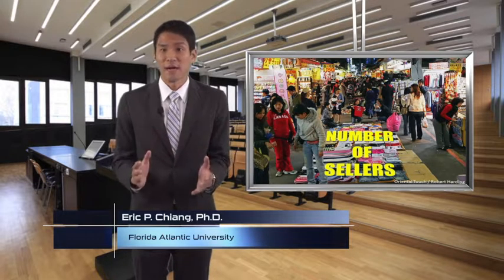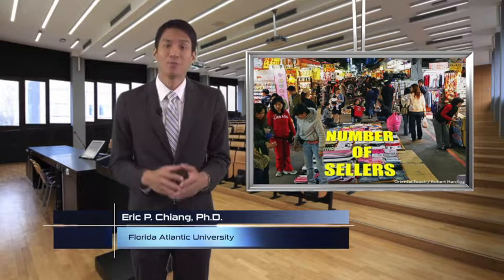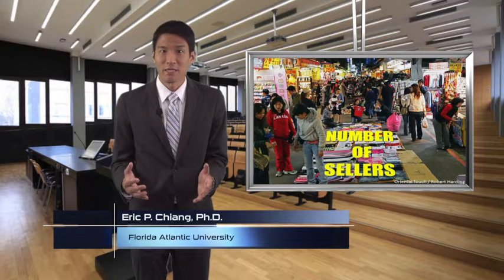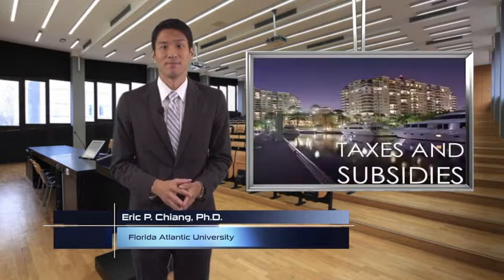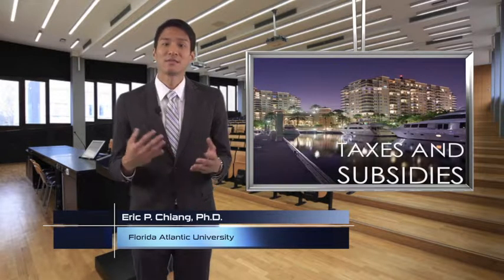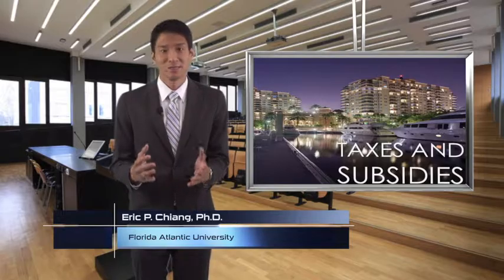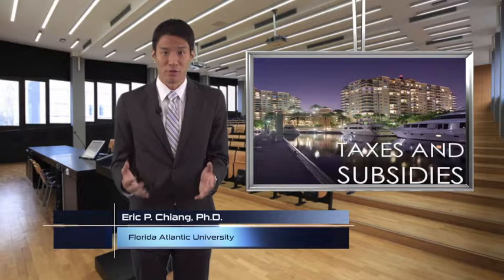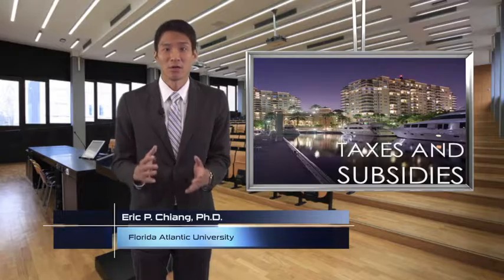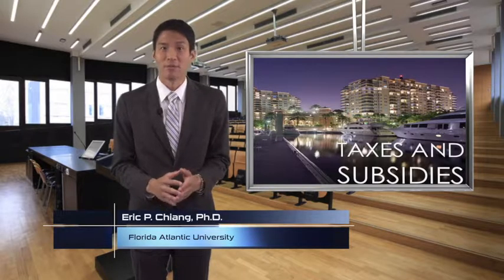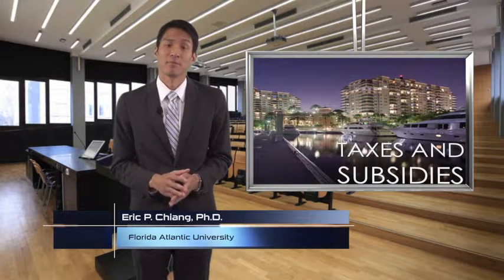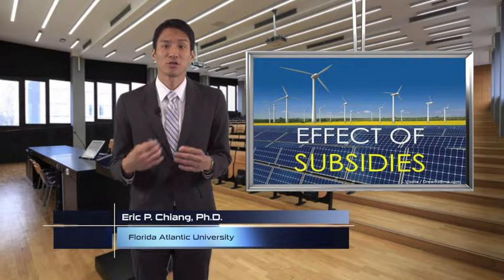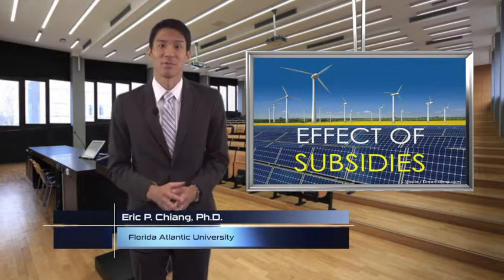The fifth factor is the number of sellers. As more producers enter the market, the supply increases, and vice versa. And the sixth factor is taxes and subsidies. Much like an increase in resource costs, taxes raise the cost of production, which decreases supply. On the other hand, subsidies encourage greater production, increasing supply.